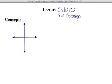In this video, we're going to look at Chapter 10, Section B.2 on True Bearings. Let's first consider the points of the compass: north, east, south, and west.